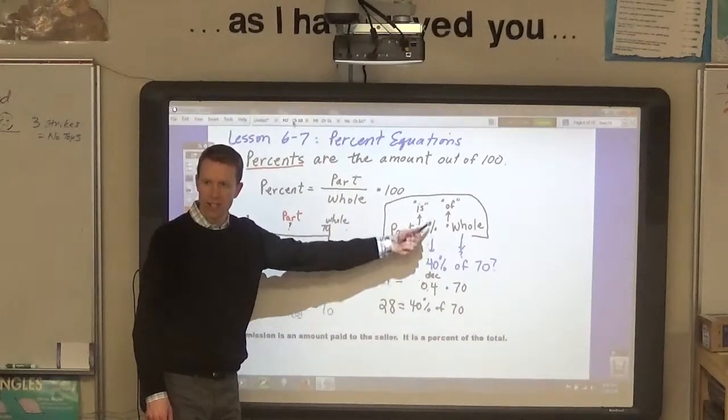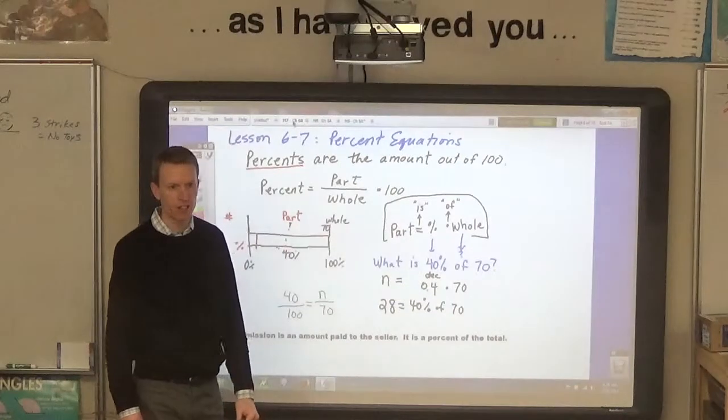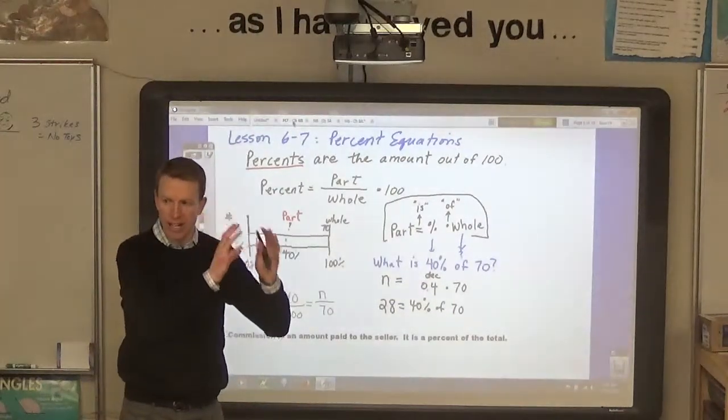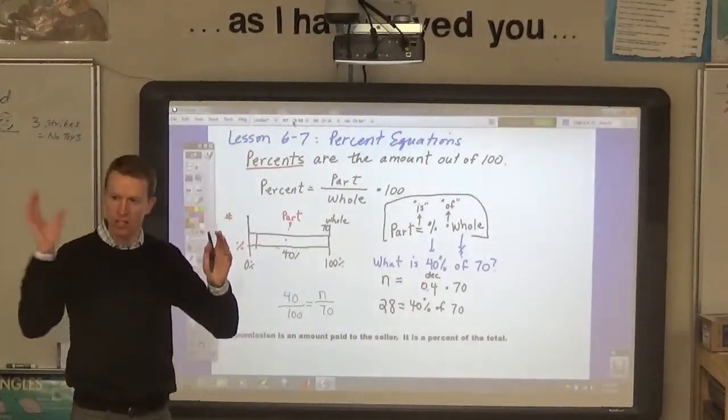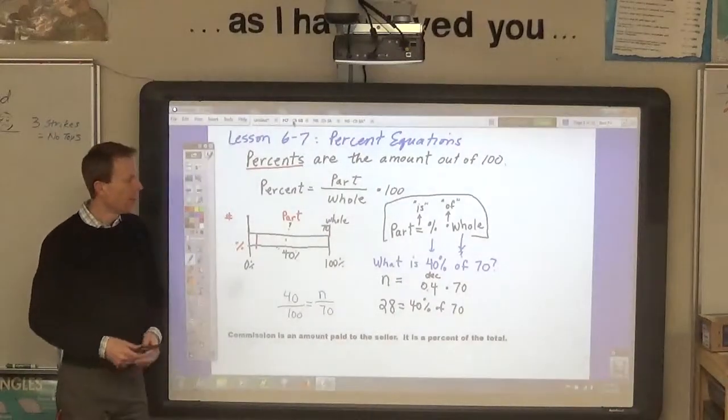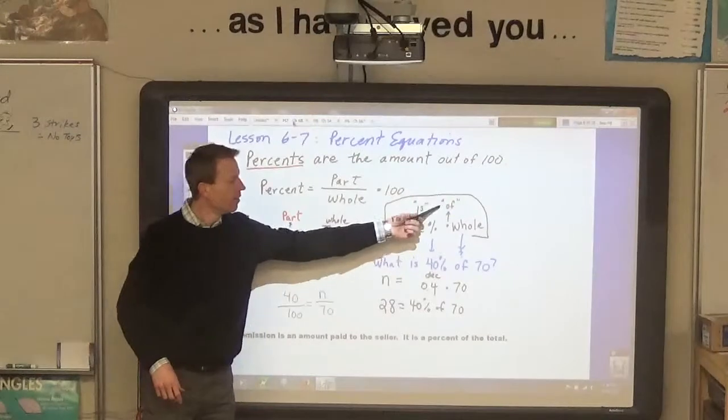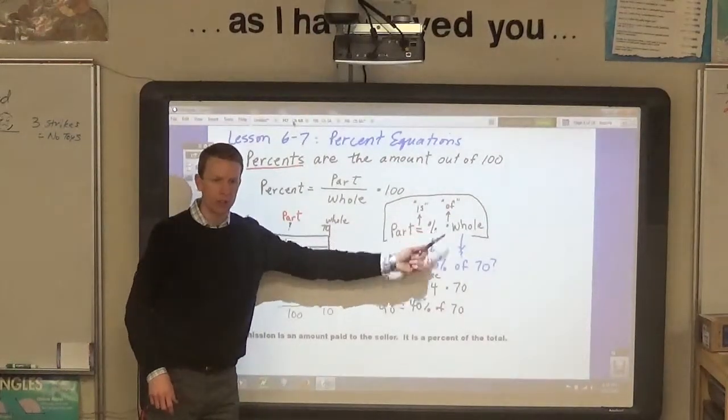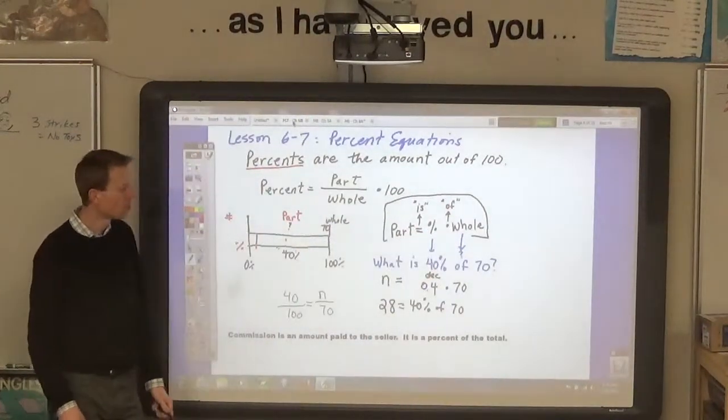So, when you see the word is in the equation, you can think of this part is equal to this part. And, the word of refers to multiplication.